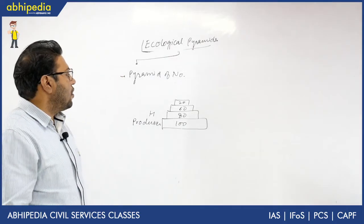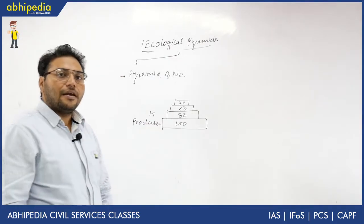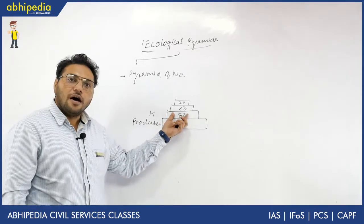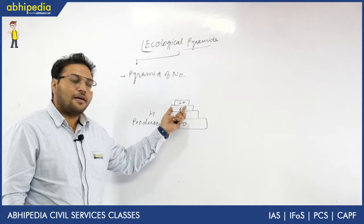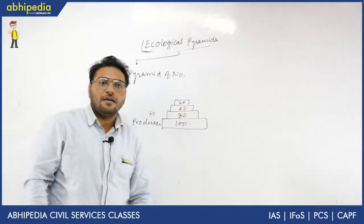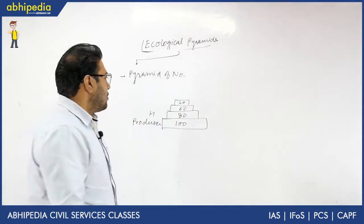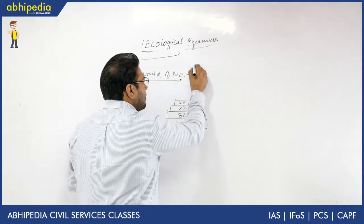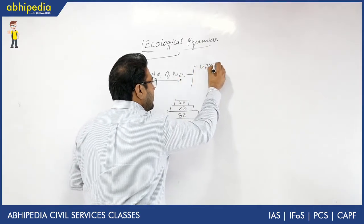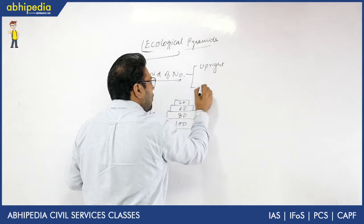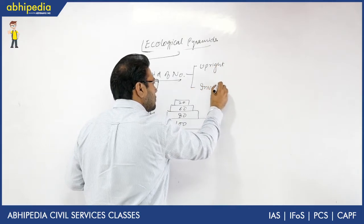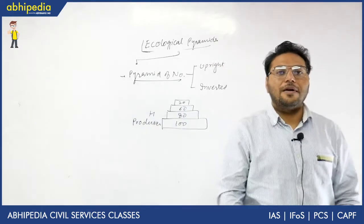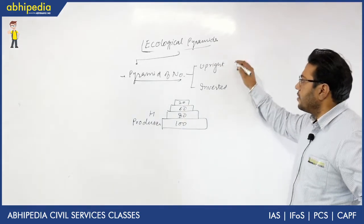This pyramid is called an upright pyramid. In an upright pyramid, the number of producers is more compared to herbivores, the number of herbivores is more compared to primary carnivores, and the number of primary carnivores is more compared to top carnivores. Most pyramids are upright.